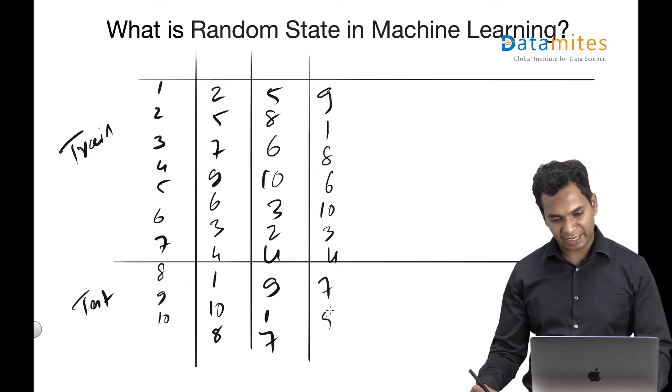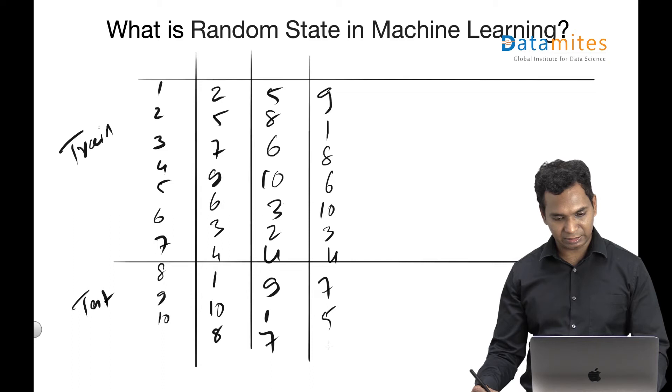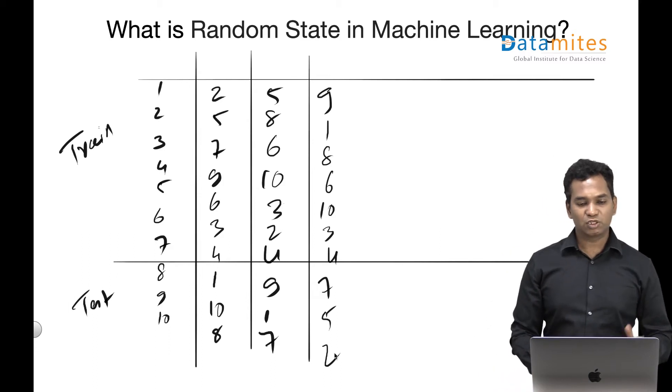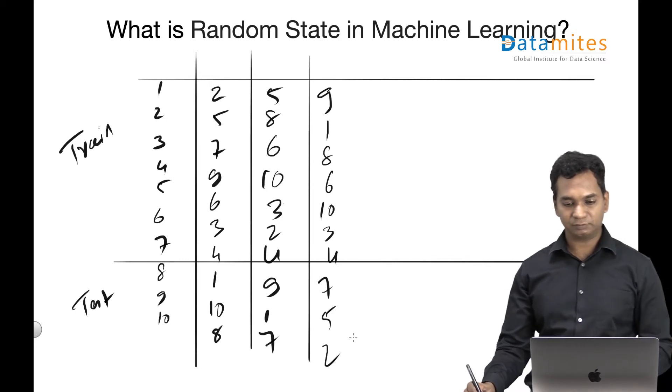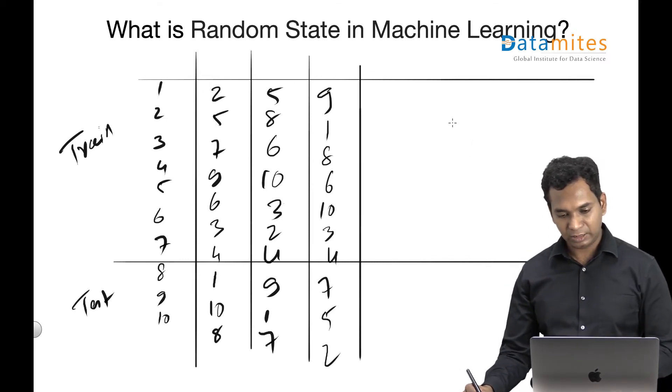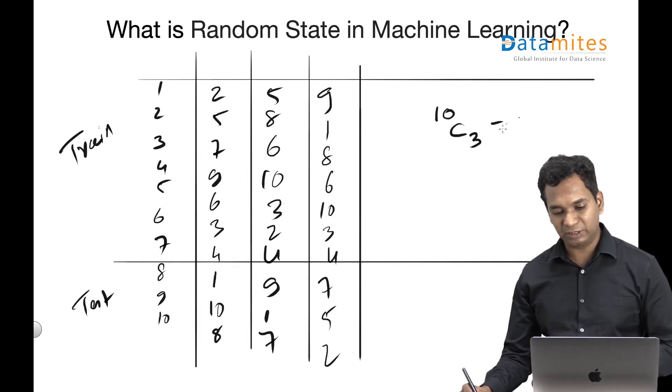Likewise, there are probably—how many different states? Combination. So if you look at it, we are basically out of this 10, I'm taking 3 here, which is also equal to 10 choose 7.